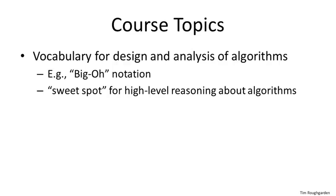It turns out that the sweet spot for clear, high-level thinking about algorithm design is to ignore constant factors and lower-order terms, and to concentrate on how well algorithm performance scales with large input sizes. Big O notation is the way to mathematicize this sweet spot.